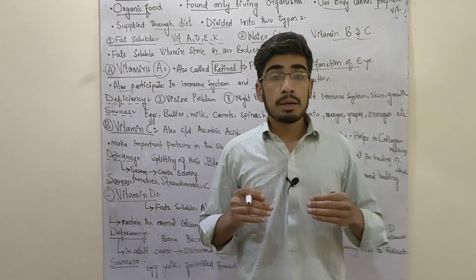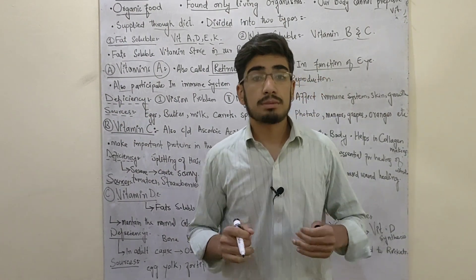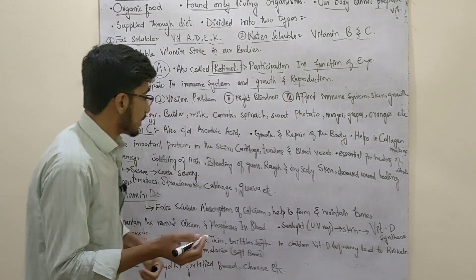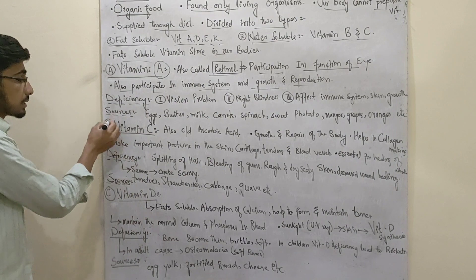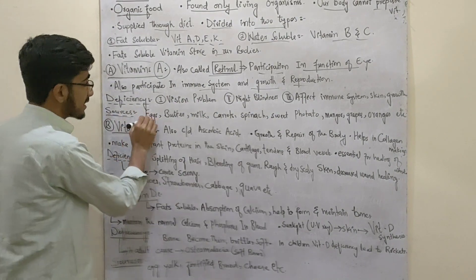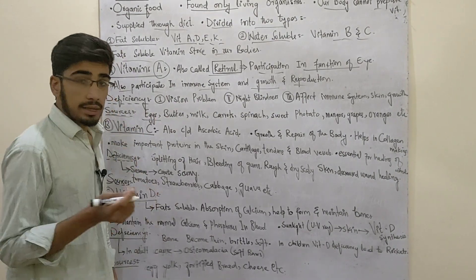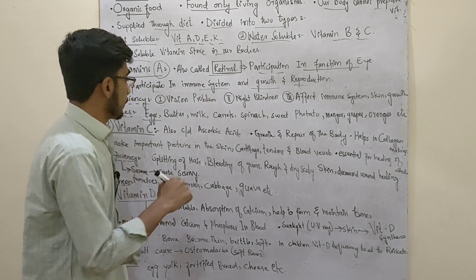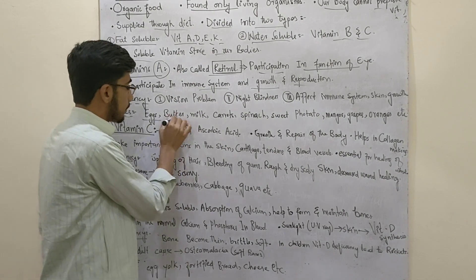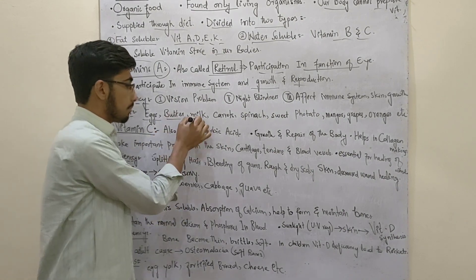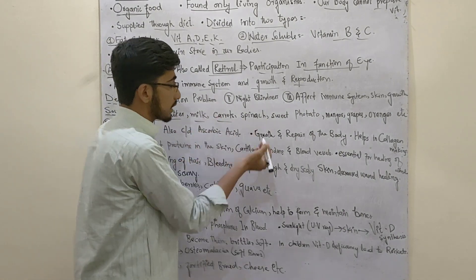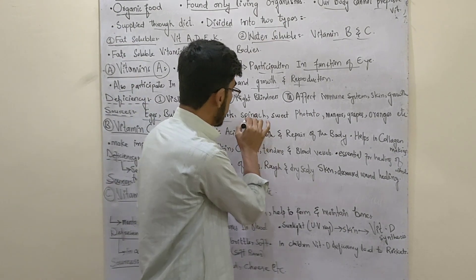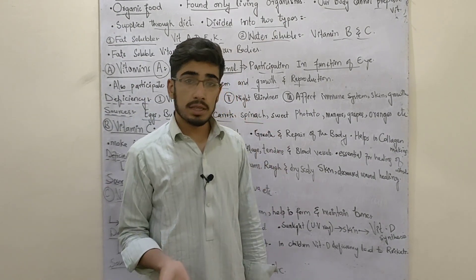The sources of vitamin A include avocado, milk, carrots, ginger, and spinach.